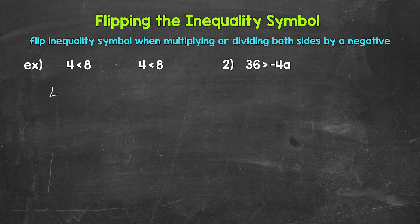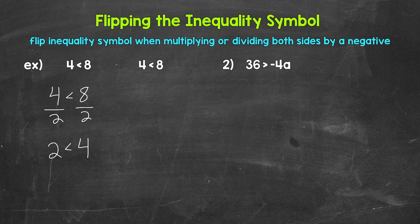Let's divide both sides by positive two and see if this remains true. We have four is less than eight, dividing both sides by two. On the left, four divided by two gives us two. On the right, eight divided by two gives us four. So we have two is less than four — the inequality remains true.